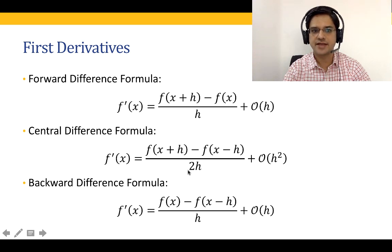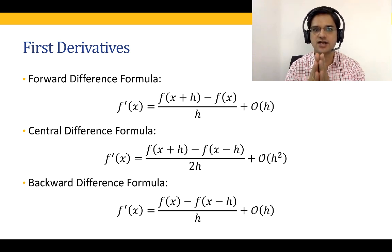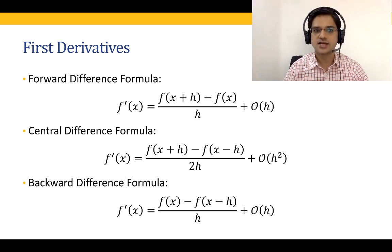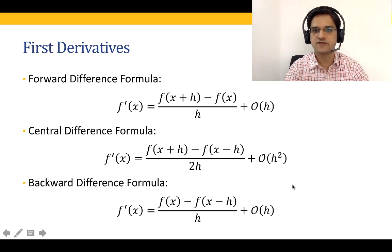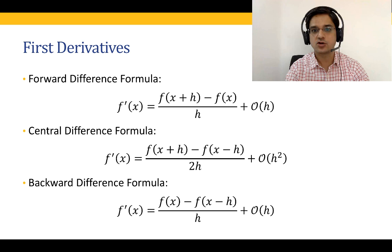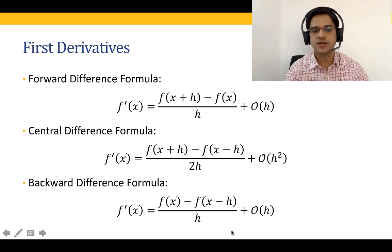The central difference formula is more accurate than the forward difference formula. It is f(x+h) minus f(x-h) divided by 2h. That means if you want to find the derivative at f(x), we take one point before and one point after that particular point and find the slope using those two points. The central difference formula is h-squared accurate, meaning every time we decrease h by a factor of 10, the error decreases by a factor of 100, not 10.